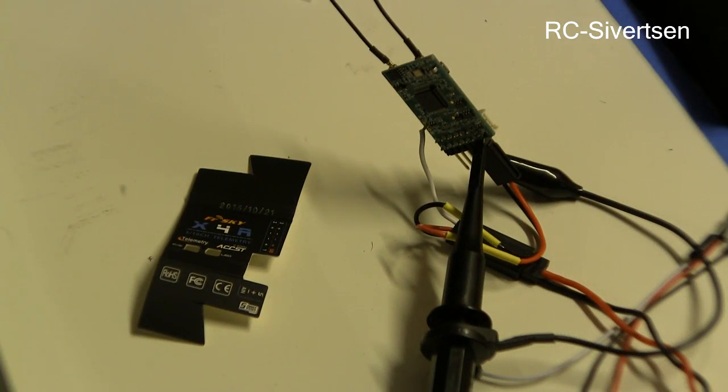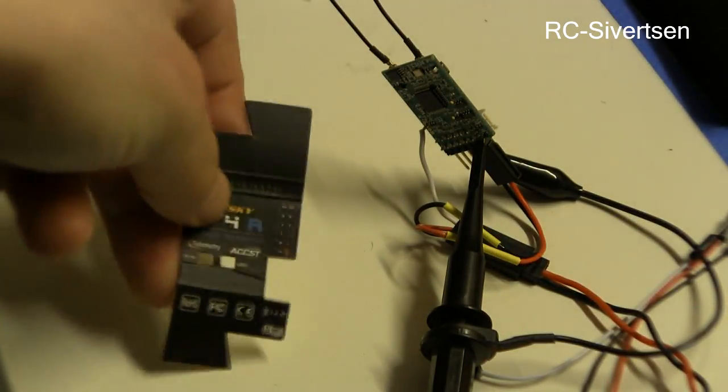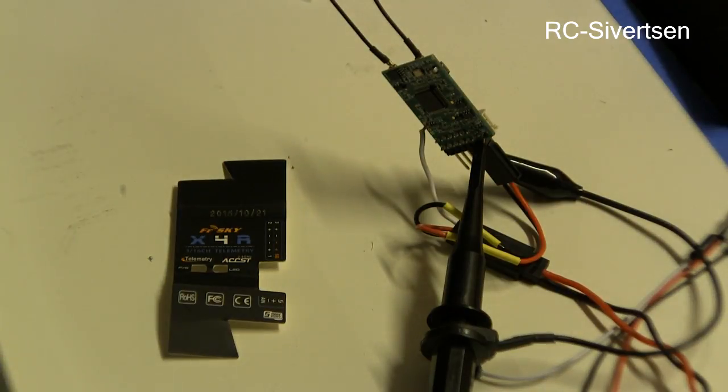Yeah so what you see here is the FreeSky X4R S bus version. I have connected it up and now this is just plain connected up and I'm going to tell you a little bit later what I mean by that. So this is the S bus. Let's take a look at the screen and see how it looks like now.